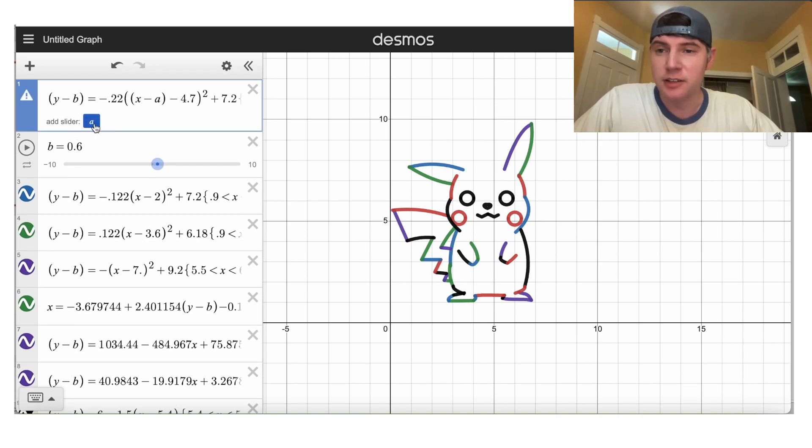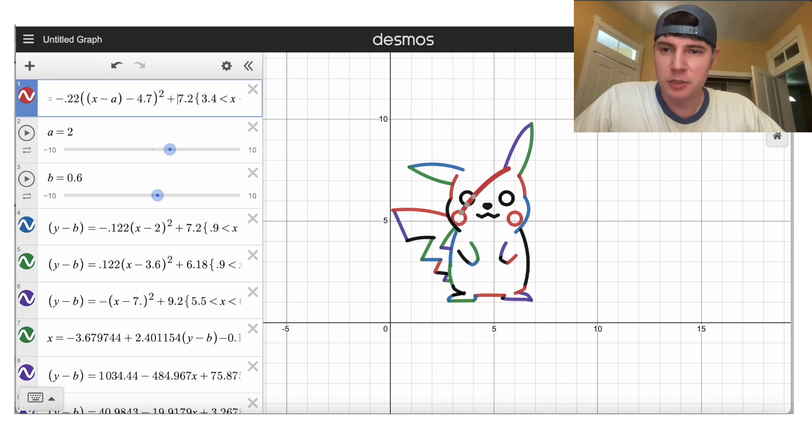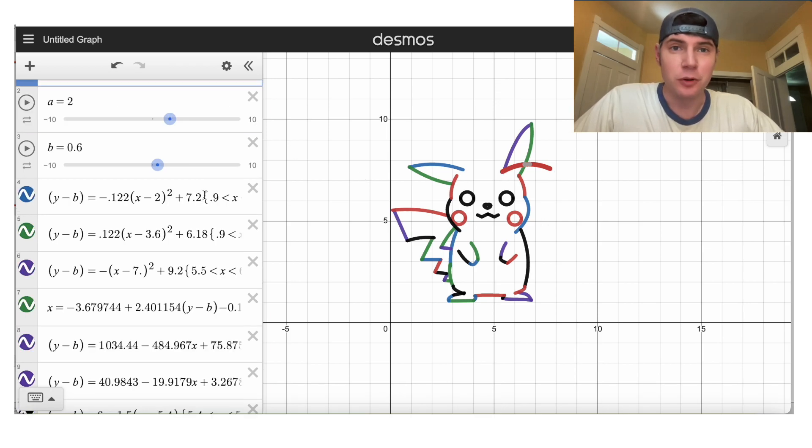close parentheses, and it asks me to add a slider, I'm gonna say yes. And I'm just gonna change all the Xs into X minus A's. And now that's moved over there. So I'm gonna fast forward again.